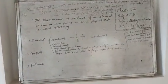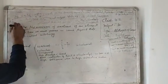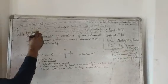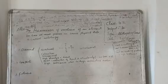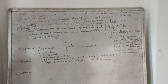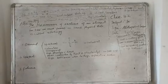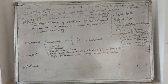Now, what are allotropes? Or what is allotropy? Allotropy is the phenomenon of existence of an element in two or more forms in the same physical state.